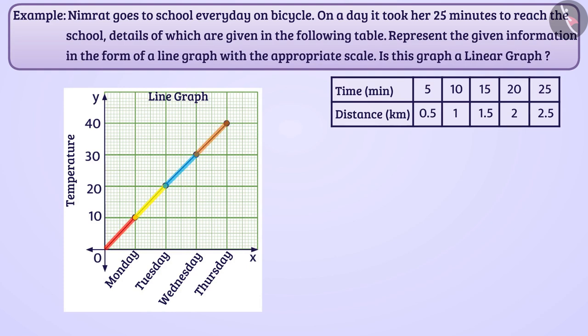If all the line segments are part of the same line, then we can say that it is a linear graph. Let us draw a graph based on the information shown.